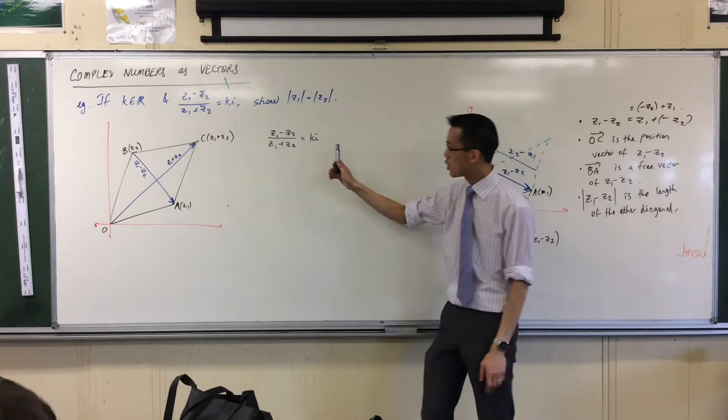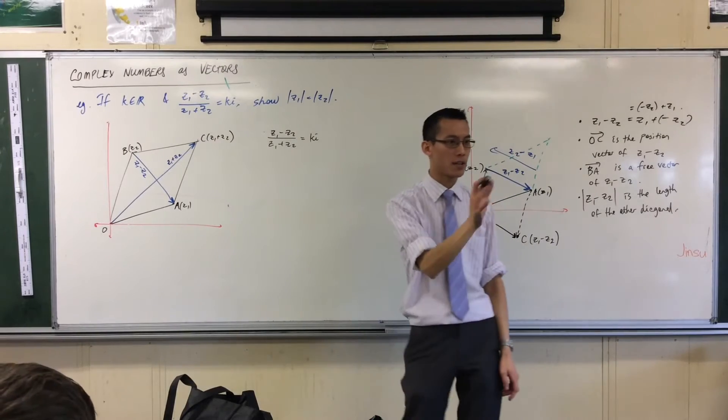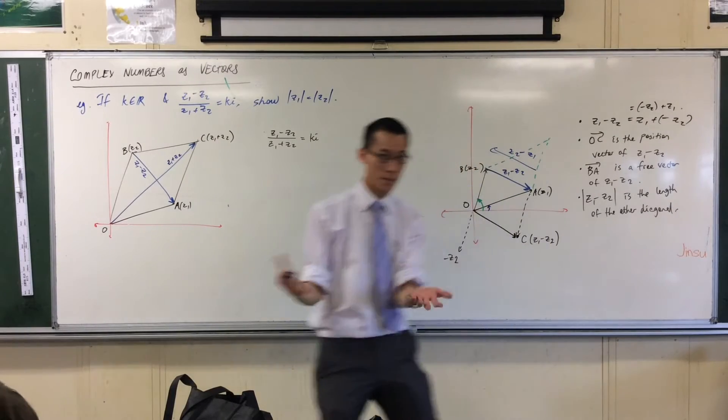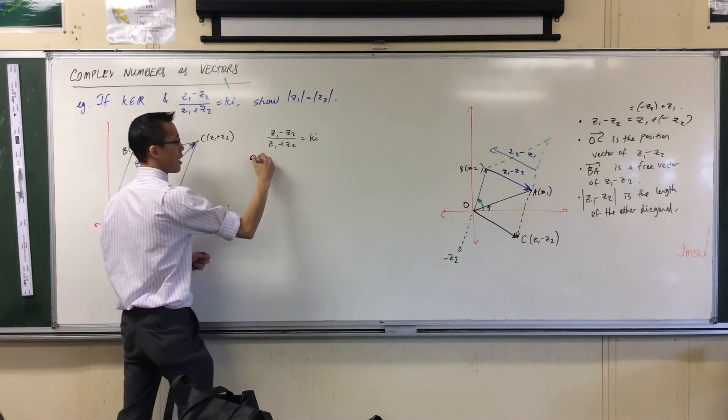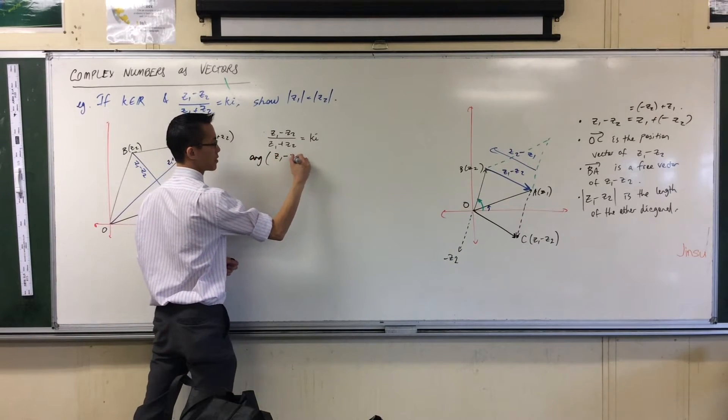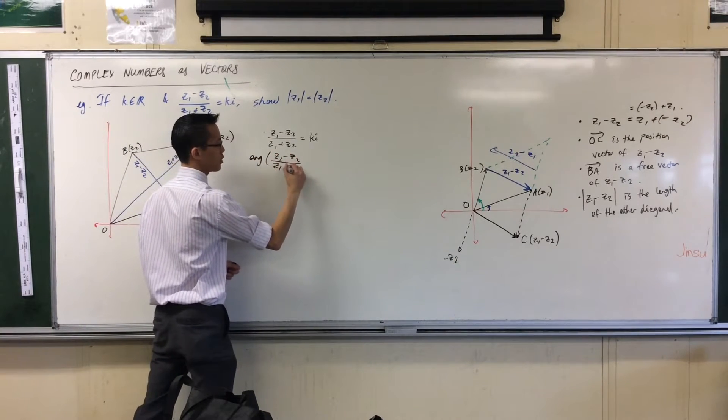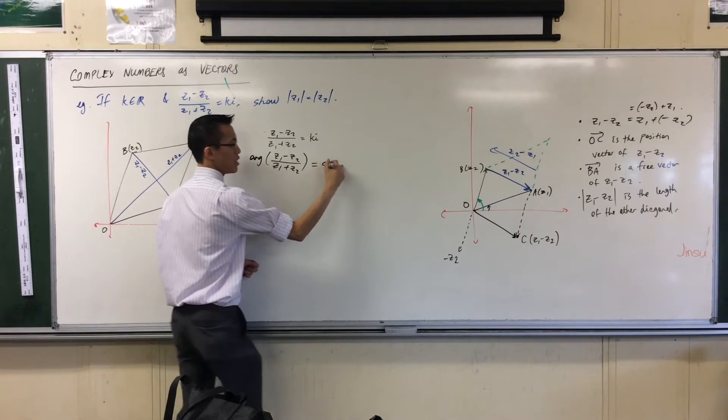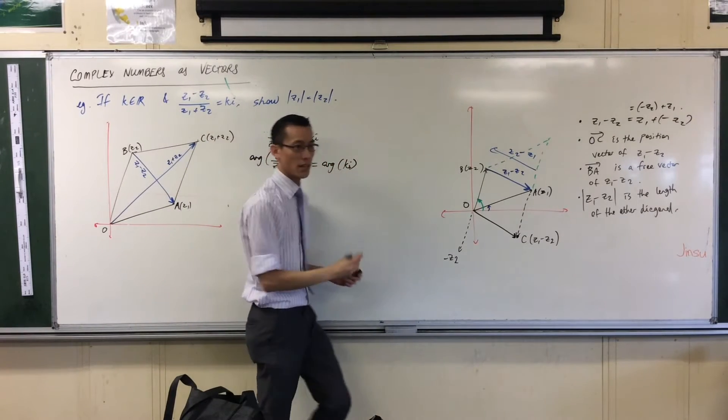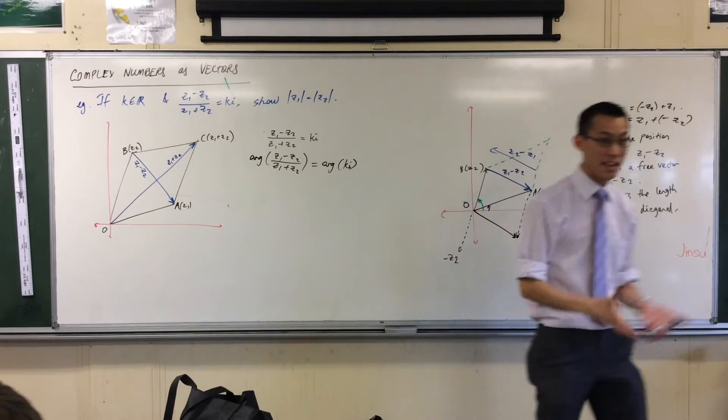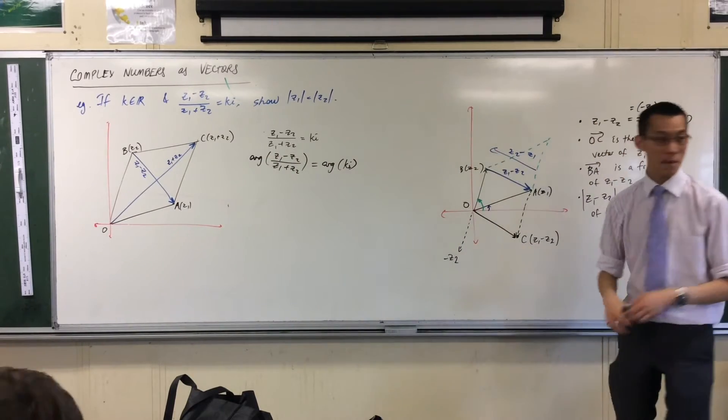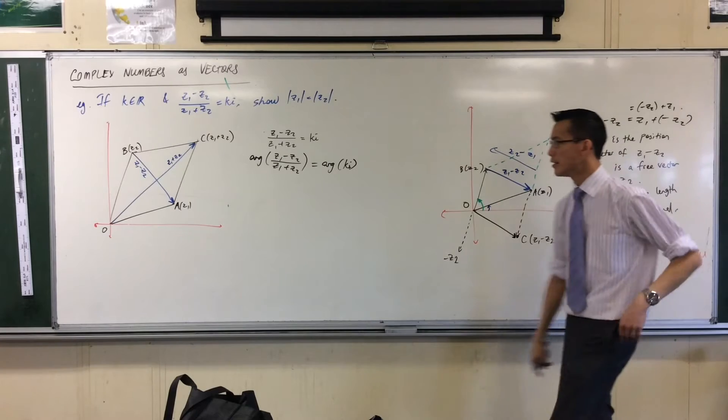Therefore both of these things have an argument. Because all complex numbers have an argument. So I'm going to say the argument of this complex number, which admittedly looks messy but that's okay, should be the same as the argument of this complex number. Because the equation says they're the same, so they must have the same argument.